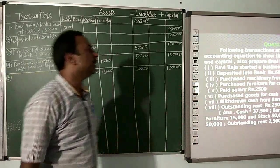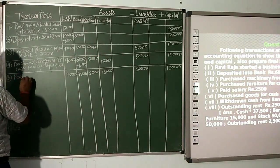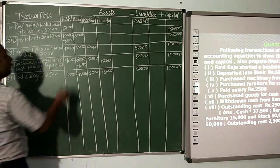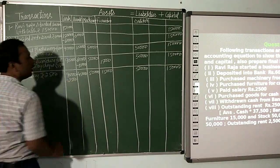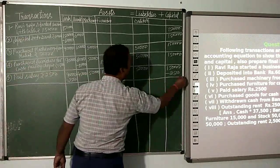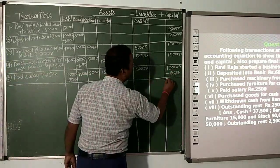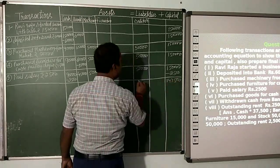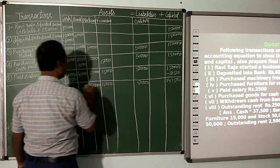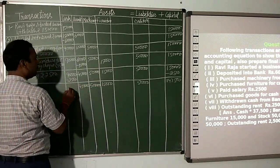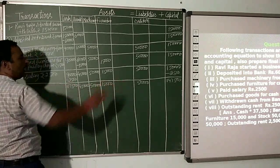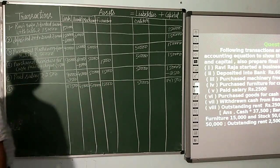पांचवां transaction: paid salary Rs. 2,500। जब salary paid करेंगे तो cash में से 2,500 reduce करेंगे और capital में से भी 2,500 reduce करेंगे क्योंकि यह expenses है। जब भी कोई expenses होंगे तो cash और capital दोनों में से reduce होगा। Capital 1,47,500 हो जाएगा। Bank balance 45,000, cash 87,500।